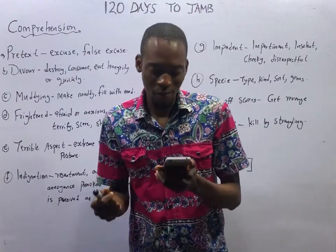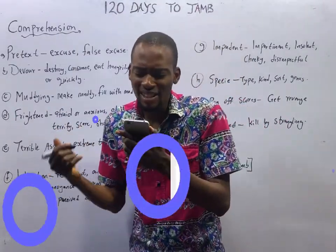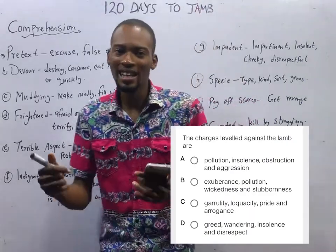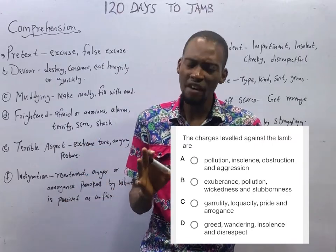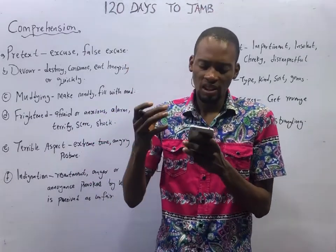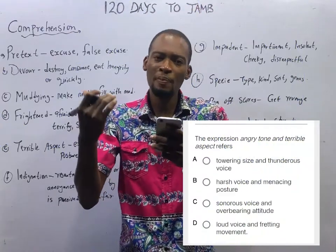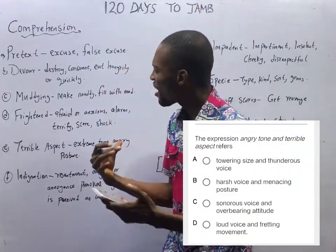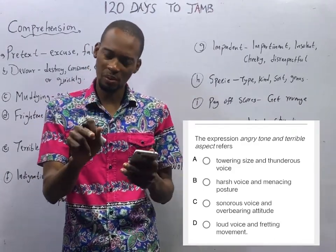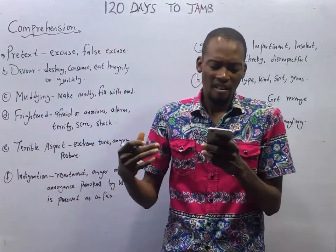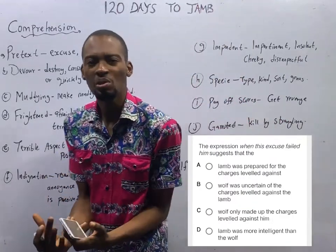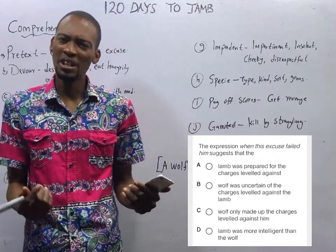Now let's take a look at the questions. The first question says: 'The charges levied against the lamb are dash.' It simply means that charges were levied against the lamb, so we shall take note of these charges. The next one says: 'The expression angry tune and terrible aspect refers to dash.' And the third: 'The expression when this excuse failed him suggests that...' — when this excuse failed him was used in the passage, what did it suggest?